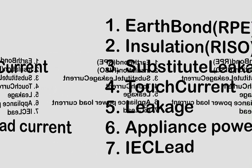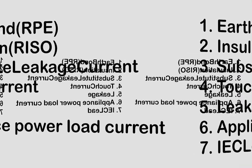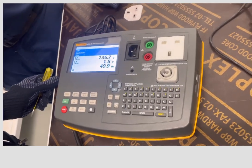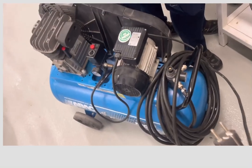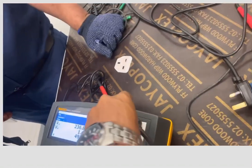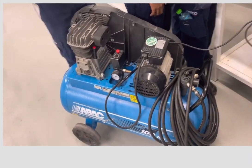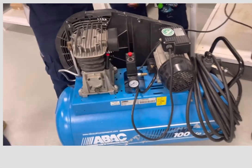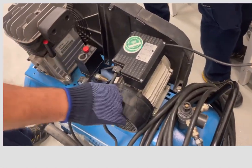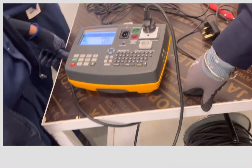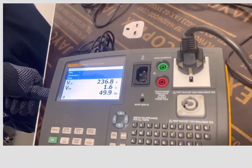Now we are going to do the PAT test practically — just watch the video carefully. This is our equipment. This is a Class 2 equipment, so first of all we need to insert this. Visual inspection is required. The technician is now doing the visual inspection — everything should be checked visually, including the cable condition and physical condition of the cable. Once satisfied, we will proceed to the test.